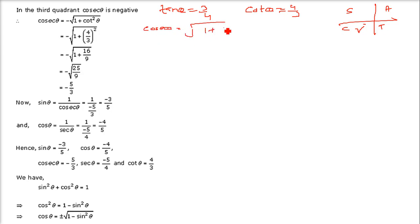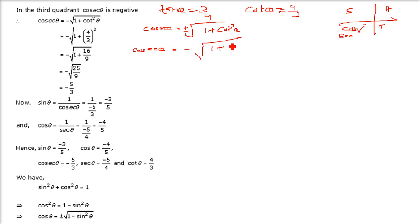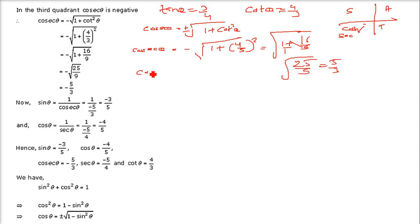Using cosec θ = -√(1 + cot²θ) (negative in third quadrant): cosec θ = -√(1 + (4/3)²) = -√(1 + 16/9) = -√(25/9) = -5/3. Therefore sin θ = 1/cosec θ = -3/5.